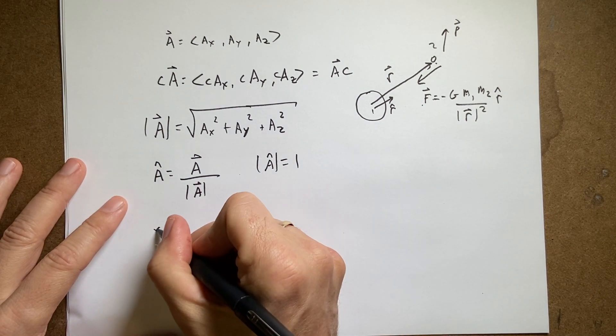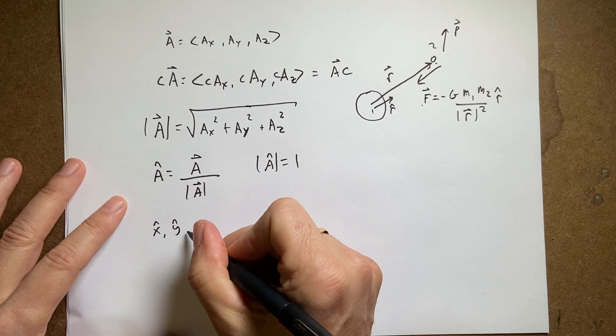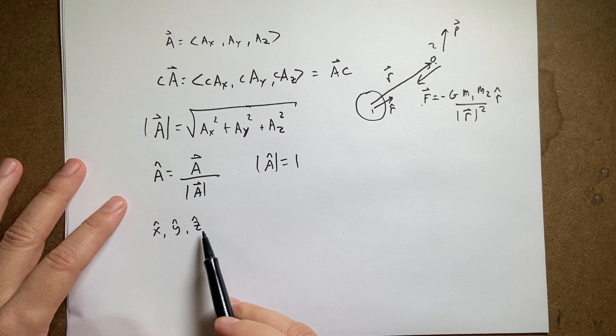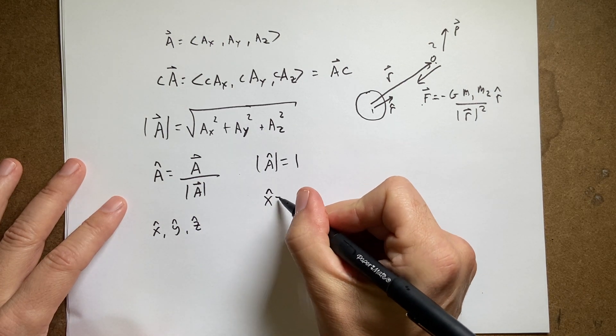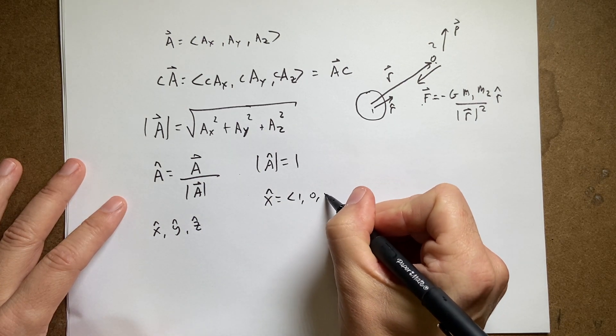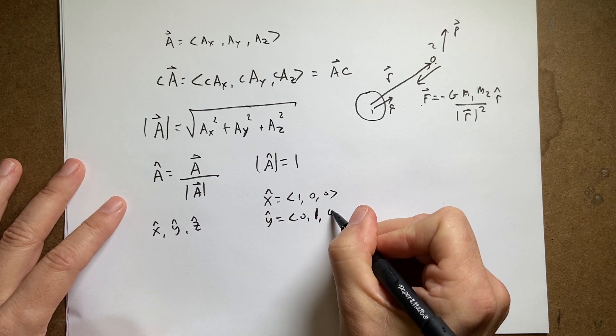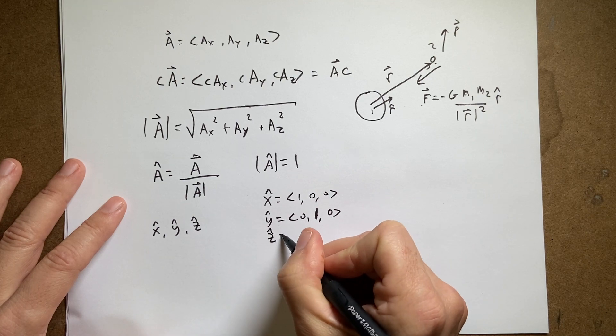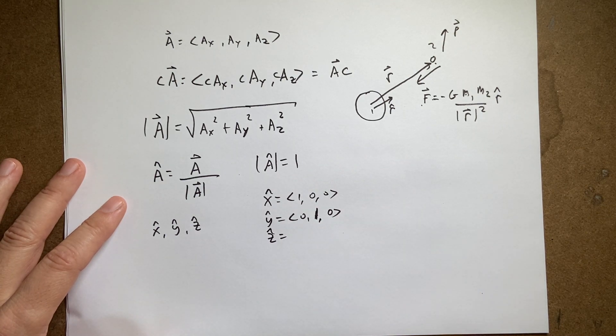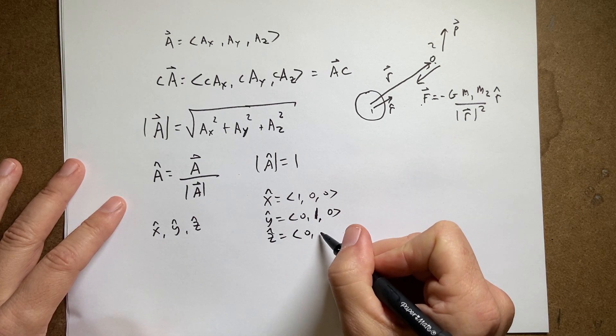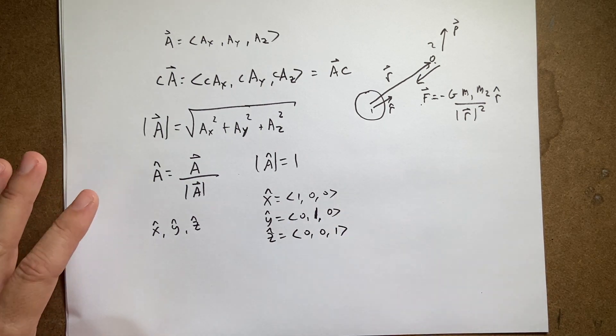And let me go ahead and say x hat, y hat, z hat are unit vectors in the x, y, and z direction. And in fact, x hat is the vector (1, 0, 0). Y hat is the vector (0, 1, 0). Z hat is the vector, I forgot what z hat is. I'm just kidding. You know what it is. (0, 0, 1). And there's no units.